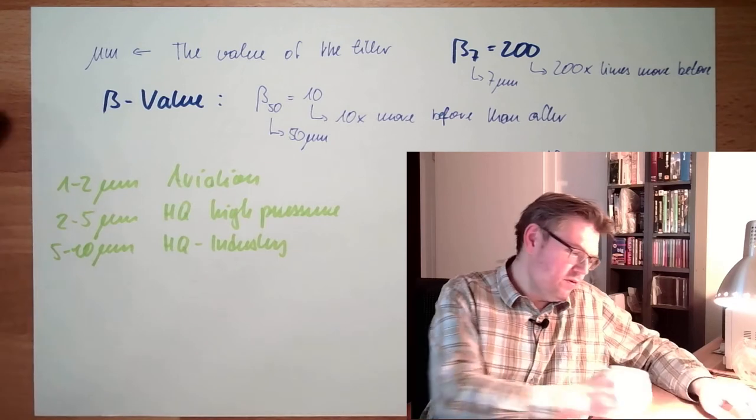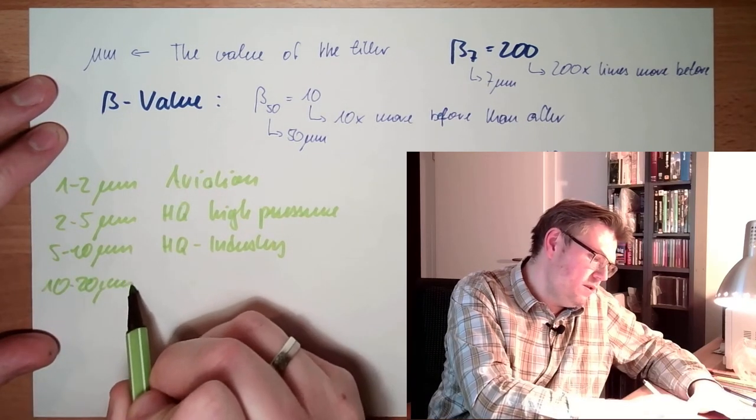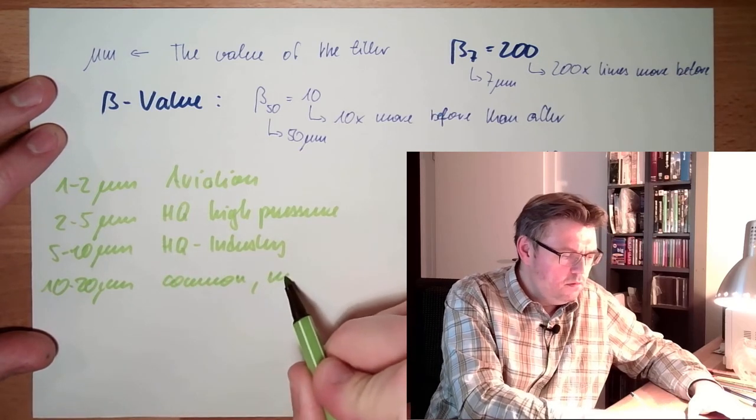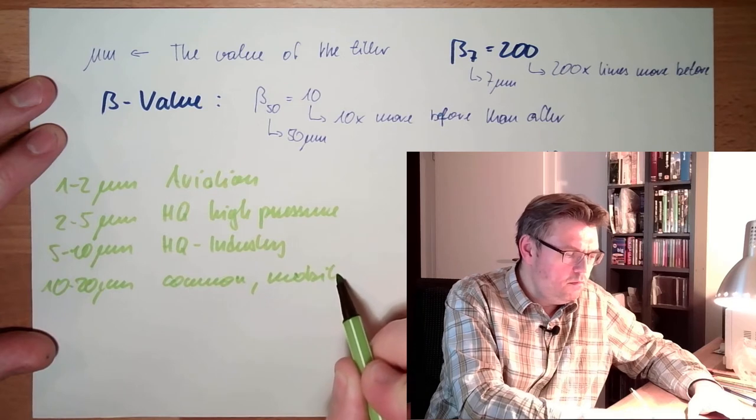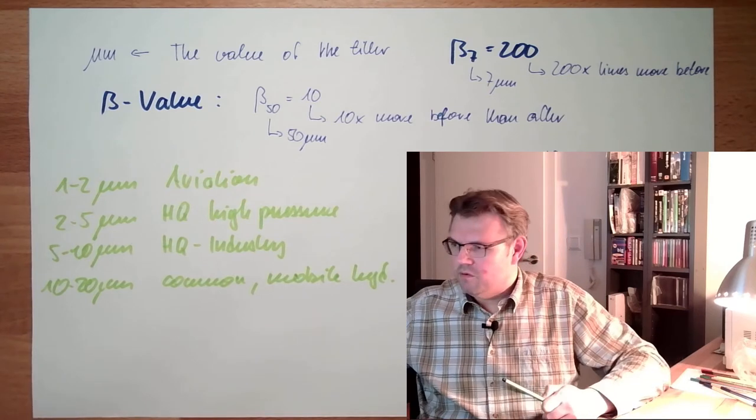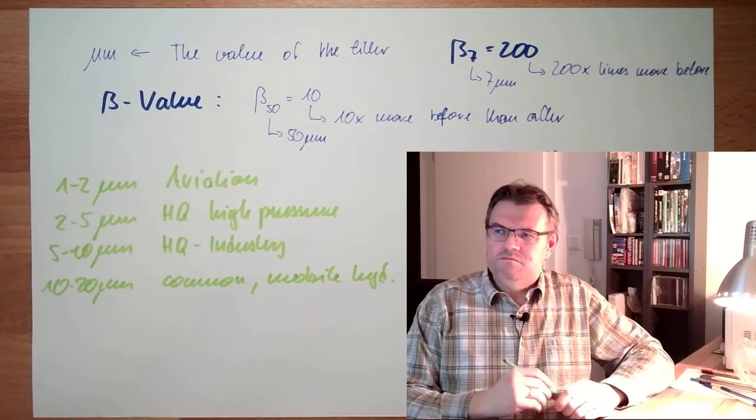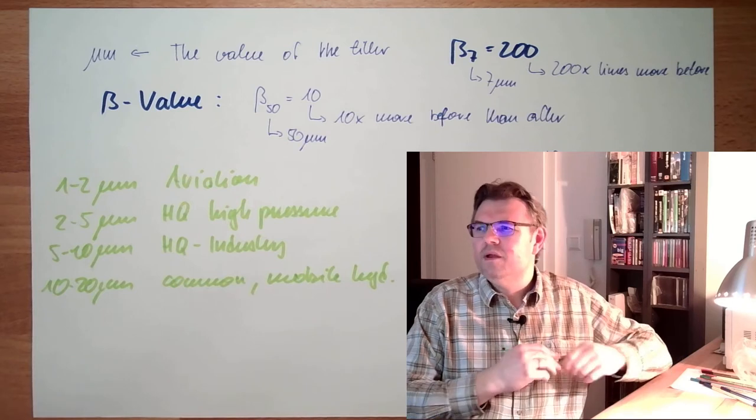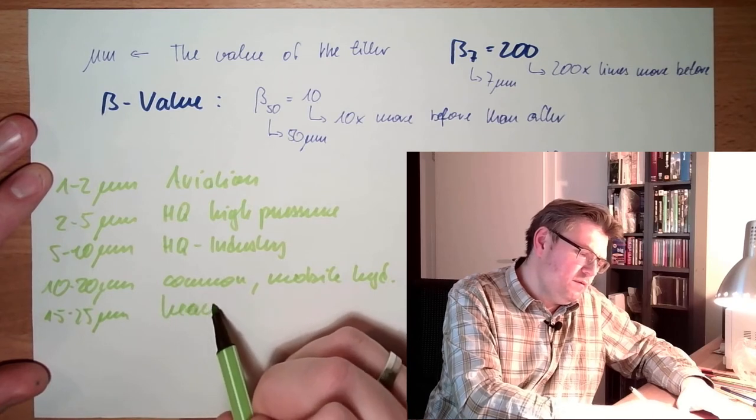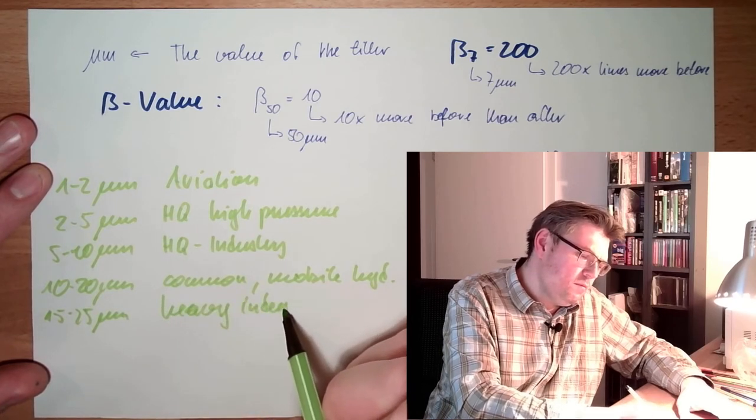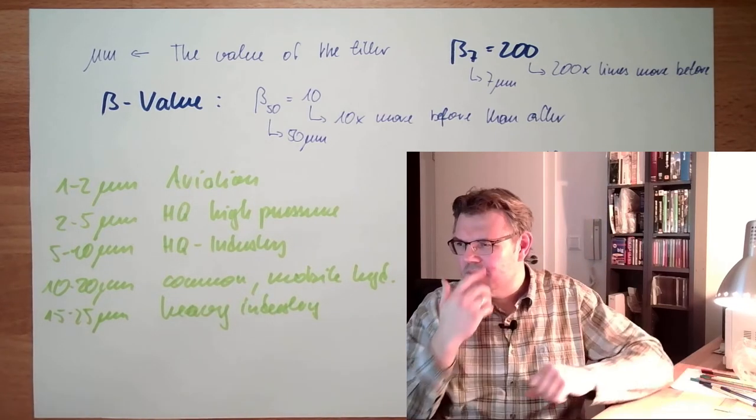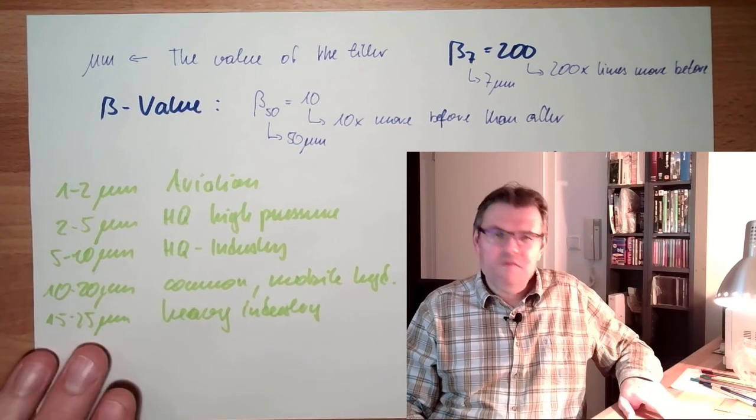There are 10 to 20 micrometers. This is a common thing, common in mobile hydraulics. Then we have 15 to 25. This is heavy industry, where you cannot get it that clean. We will already have limited lifespan.